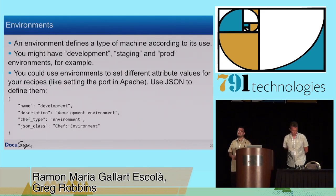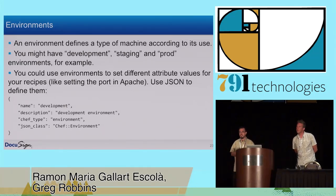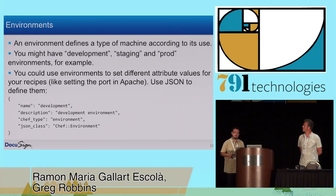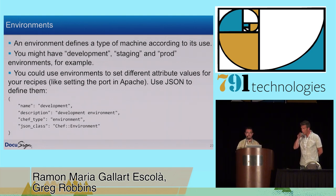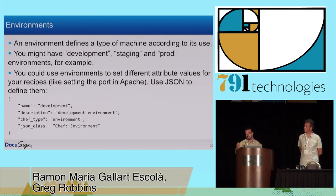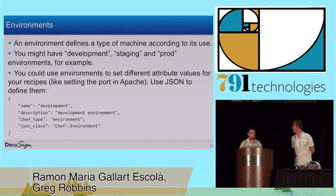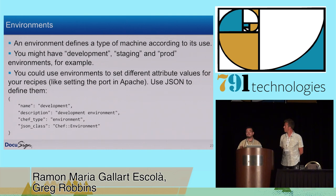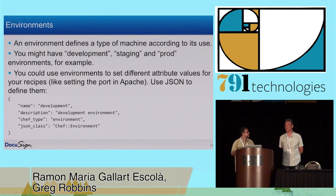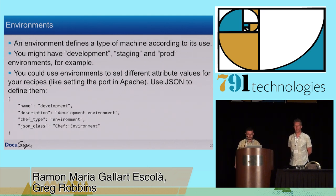So what's an environment? An environment defines a type of machine — it can be a development machine, a production machine, a staging machine, whatever — but it's a type of machine. It's defined in a JSON file named whatever you want, and you can see an example here. You can set attributes for the cookbooks you have inside the environments, and we have pretty well-defined files in our Git repos so you can look at those.